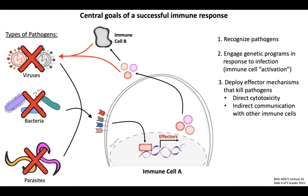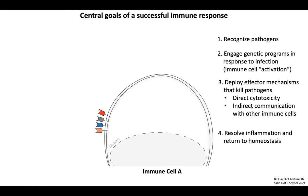Step number three is to deploy the effector mechanisms that have been engaged by activated immune cells in order to contribute to the killing of target pathogens. This can occur in one of two ways: either by the direct cytotoxic targeting of a microbe, or through indirect communication with other immune cells that then in turn are sequentially responsible for killing the microbe. Once the pathogen is successfully eliminated, step number four is to resolve inflammation and help return both the cell and the surrounding tissue to a healthy homeostatic baseline. This is really important because a lot of inflammatory mechanisms employed by immune cells can cause off-target pathologies called immunopathologies, where you damage neighboring healthy tissue even though it isn't involved in the infection. The resolution of inflammation is a critical step in a successful immune response, accomplished by a variety of negative feedback mechanisms engaged by activated immune cells.